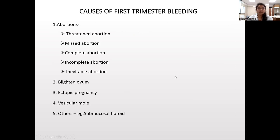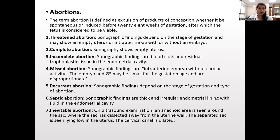Causes of first trimester bleeding include abortions such as threatened, missed, complete, incomplete, inevitable, and blighted ovum; ectopic pregnancy; vesicular mole; and others including submucosal fibroid.